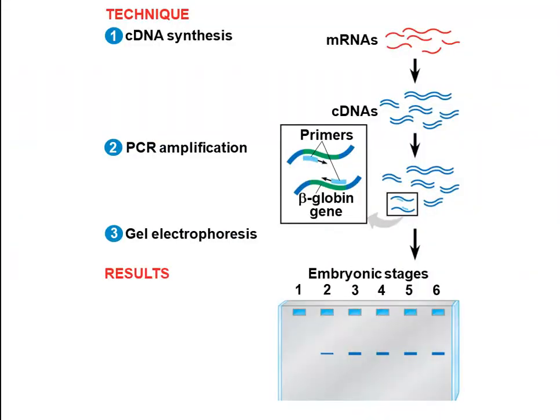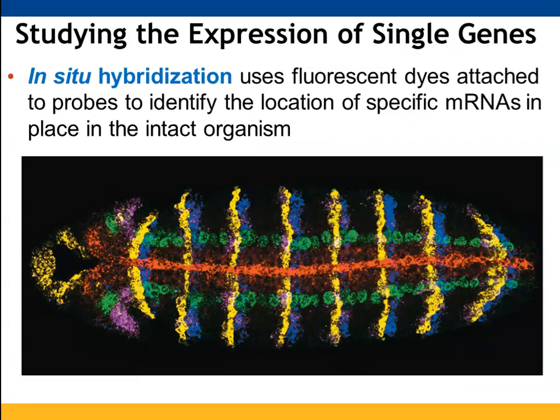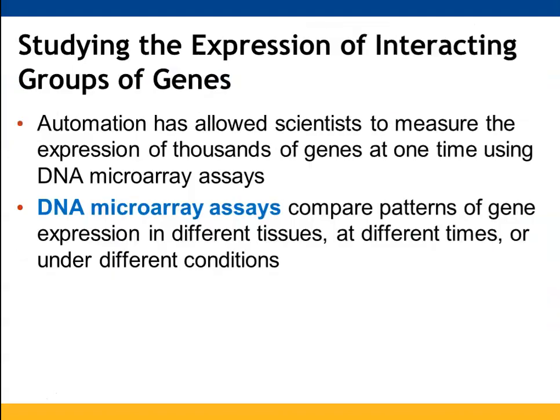Once the mRNA is converted to cDNA and amplified, we can track gene expression over development. For example, we can see that the beta-globin gene was initially absent in the first embryonic stage, appeared slightly in the second, and was expressed at roughly the same level in subsequent stages. In situ hybridization uses fluorescent dyes attached to probes that target specific mRNA sequences to understand where those proteins are found in an organism.